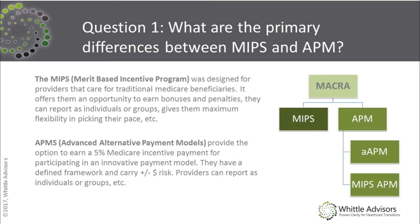Before we get into the intricacies of MIPS, Kelly, do you mind giving us a primer on the differences between MIPS and APMs so that we might understand why the MIPS track is indeed so prevalent? Absolutely. For those brand new to the MACRA regulation, MACRA stands for the Medicare Access and CHIP Reauthorization Act. MACRA divides into two tracks: Track one is MIPS, which stands for Merit-Based Incentive Program, and the second track is APM, or Alternative Payment Models. Under APMs, there are two divisions: the Advanced Alternative Payment Models and MIPS APMs.